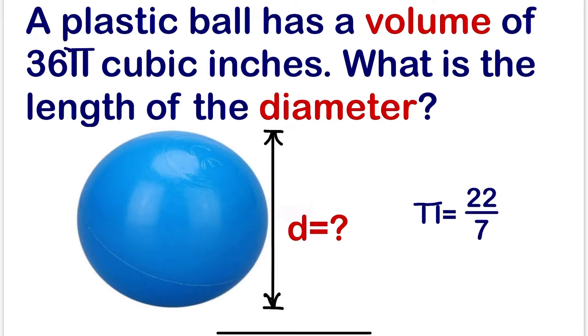Welcome once more to Mathematics Pro. Today we are going to calculate the diameter given the volume of a sphere. A plastic ball has a volume of 36π cubic inches. What is the length of the diameter?